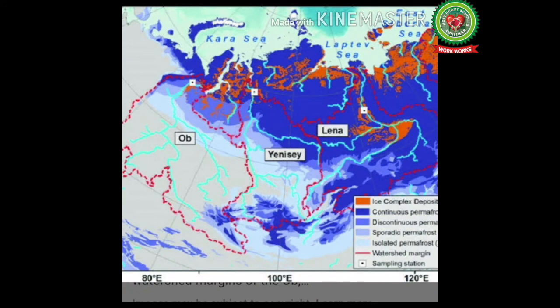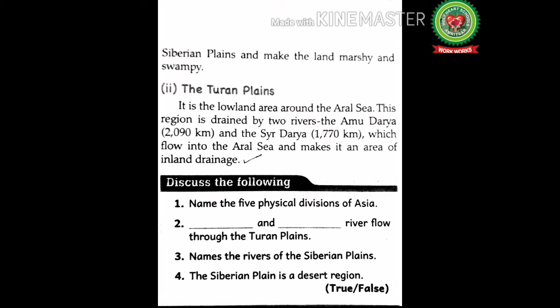River Ob is a major river in western Siberia, the world's seventh longest river, originating in the Altai Mountains and draining into the Arctic Ocean. The Yenisei River rises in Mongolia and flows northwards through Siberia, draining into the Kara Sea in the Arctic Ocean. The Lena is the easternmost of the three great Siberian rivers, the 11th longest river in the world, flowing northeast and draining into the Arctic Ocean.